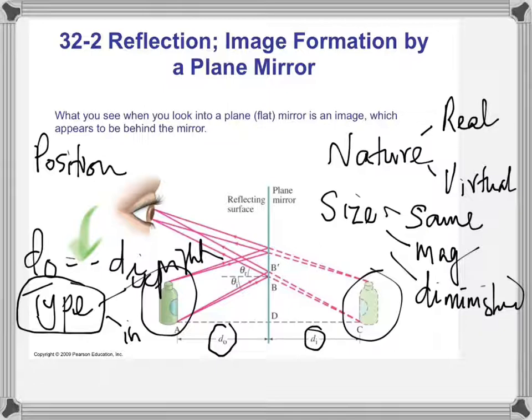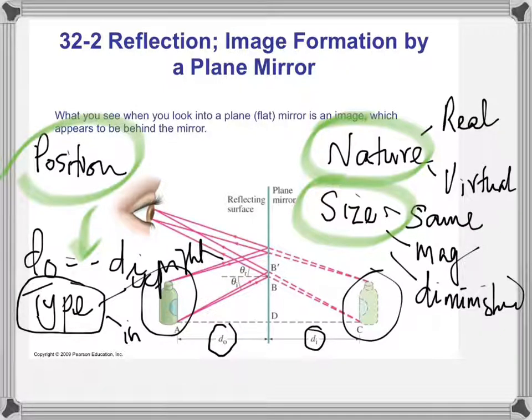So those are the four properties of the image. Number one, the nature of the image. Could be real or virtual. Number two, the size. Could be same size, magnified, diminished. Position of the image. There are several options there. Chiefly could be in front or behind. And type of the image could be either upright or inverted.